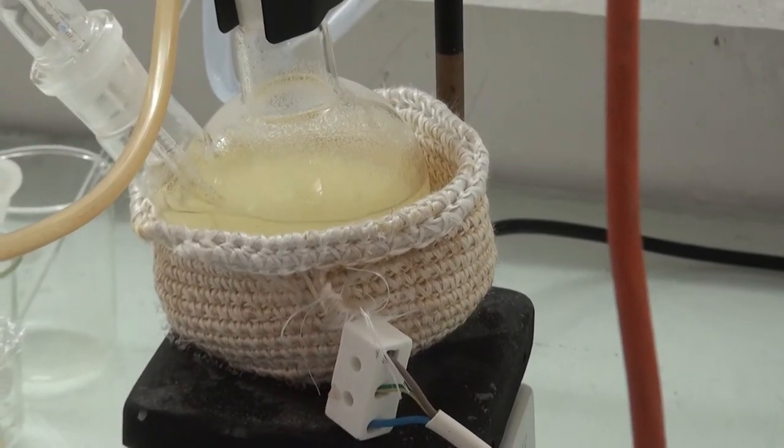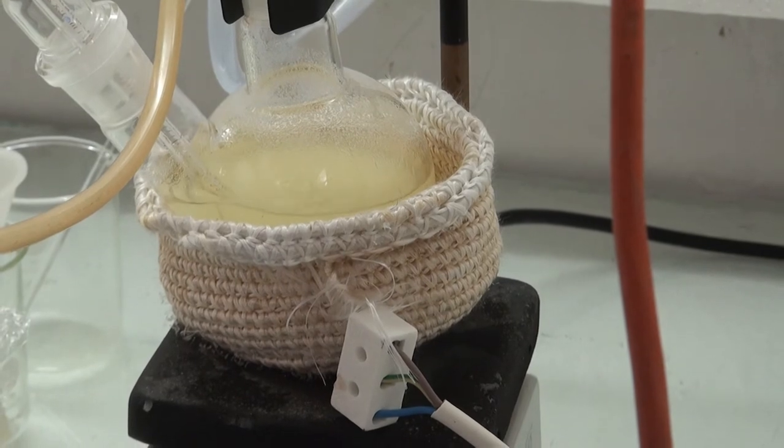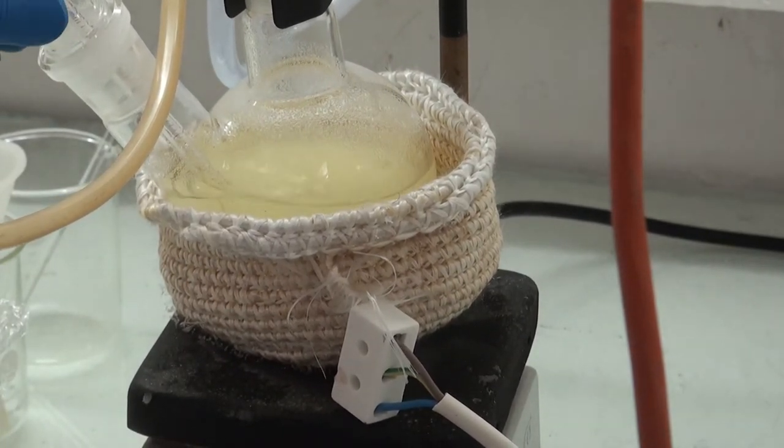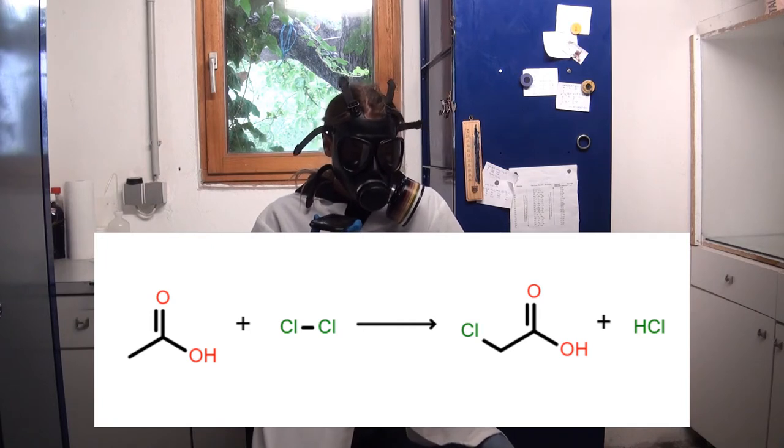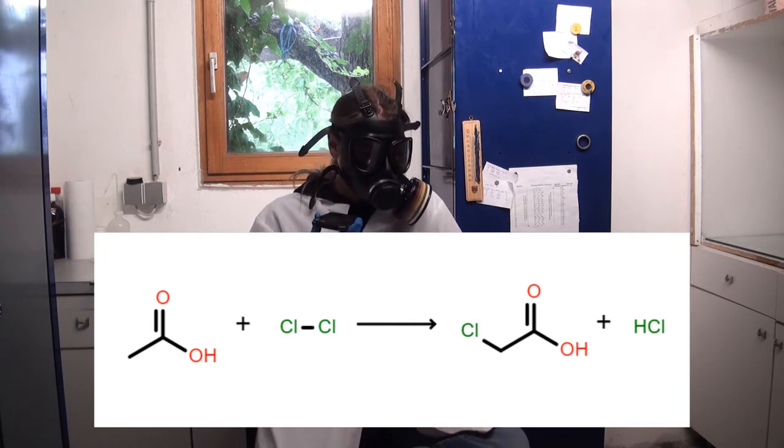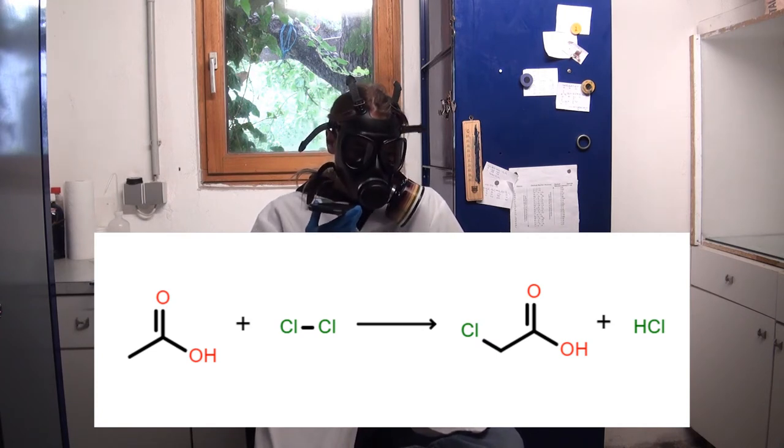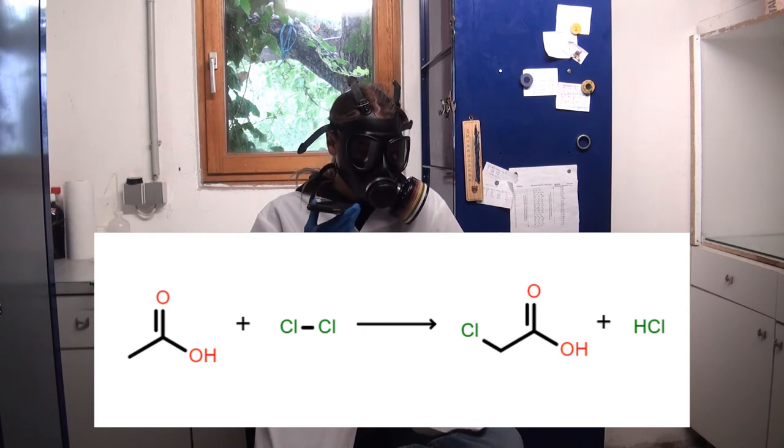After a few minutes all the air was purged out of the apparatus and hydrogen chloride started evolving. In this reaction one equivalent of acetic acid reacts with two equivalents of chlorine to produce one equivalent of chloroacetic acid and one equivalent of hydrogen chloride.